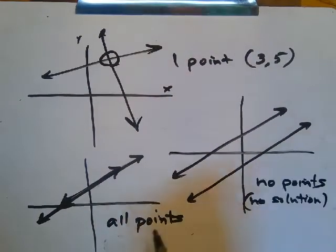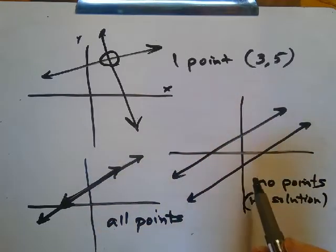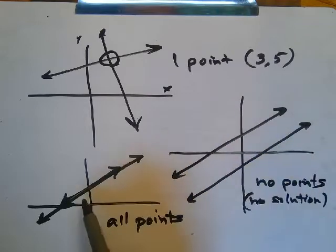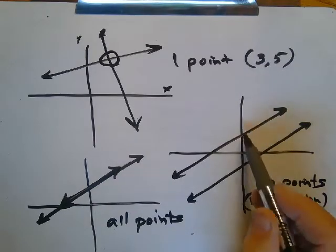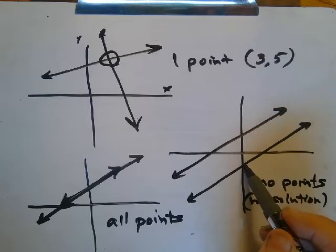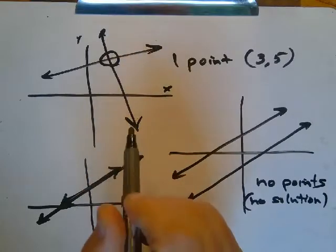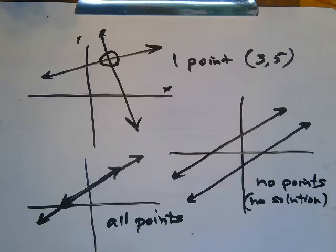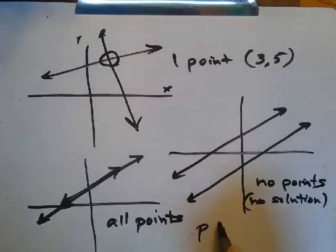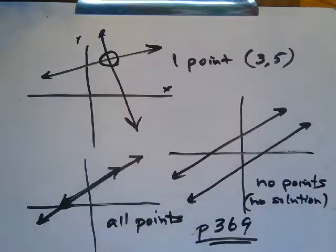So there are three things that could happen: they could intersect in one point, no points, or all points. Notice that the two cases at the bottom — no points and all points — the slopes are the same. For the all-points case, they're not only the same slope, they're the same y-intercept. For no points, they have the same slope and different y-intercepts. It's only the one-point case where the slopes must be different. These three situations are found in your book on the bottom of page 369.